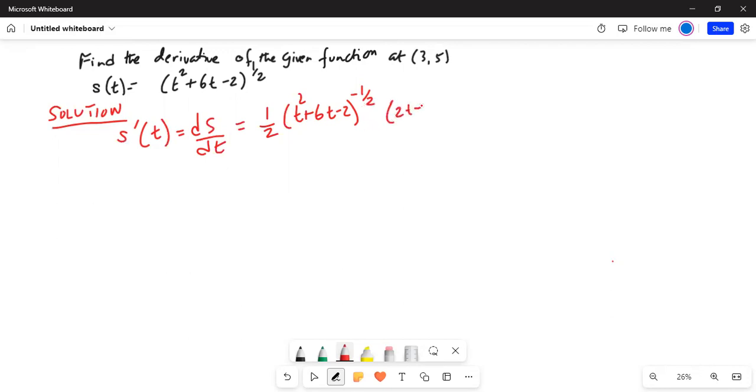This reduces to s'(t) = 2(t+3) divided by 2(t² + 6t - 2)^(1/2). We have taken the common factor 2 out from 2t + 6, left 2 outside the parenthesis, t + 3 inside.